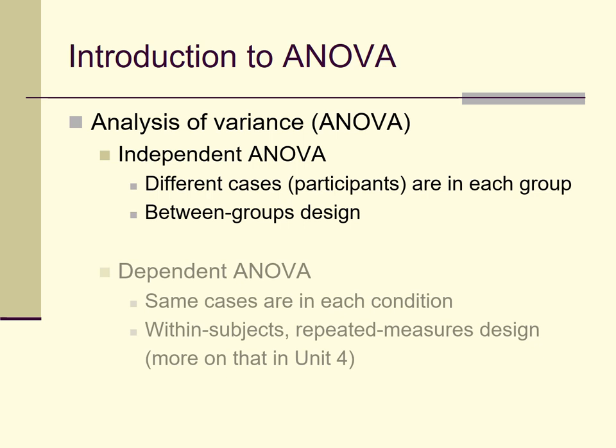There are other designs where membership in groups is not independent — it is dependent. We sometimes call these groups conditions. For example, participants might undergo one emotional manipulation in one phase of a study, and a different manipulation in another phase. Or in a clinical trial, the same clients receive drug A, then drug B, then drug C across many weeks. These are dependent designs requiring repeated measures ANOVAs.